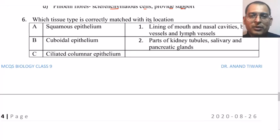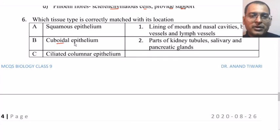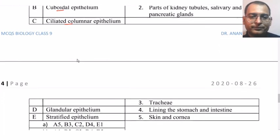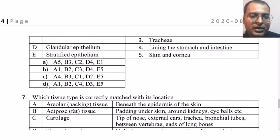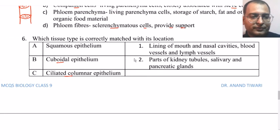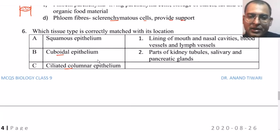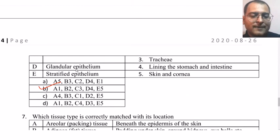Next question: which tissue type is correctly matched with its location? Squamous epithelium — lining of the mouth, nasal cavities, blood vessels and lymph vessels; cuboidal epithelium — parts of kidney tubules, salivary and pancreatic glands; ciliated columnar epithelium — trachea; glandular epithelium — lining the stomach and intestine; stratified epithelium — skin and cornea. All are correctly matched — kindly revise the location of these tissue types.